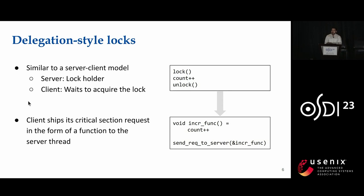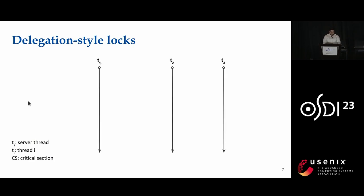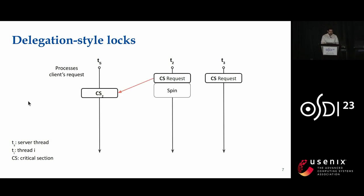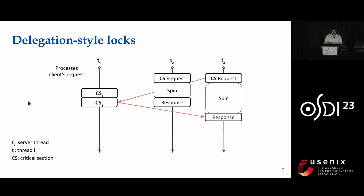Let's look at an example of how this is done. We have a critical section which is incrementing a shared counter, and that critical section is wrapped as a function and a function pointer is sent to the server for execution. In this running example, we have one server thread and two client threads. The server processes client requests — first executing thread two's critical section and sending a response back, then executing thread three's critical section and sending the response back. Since delegation-style locks provide locality of shared data, the critical section execution time is much lower compared to traditional lock design.